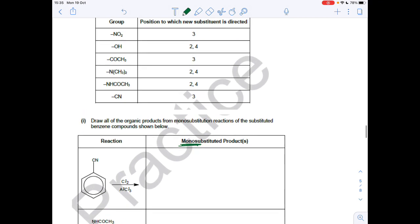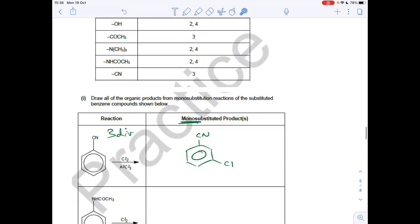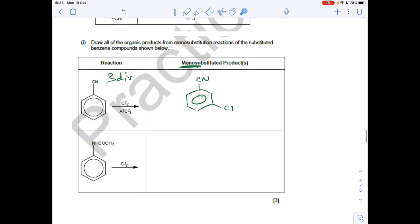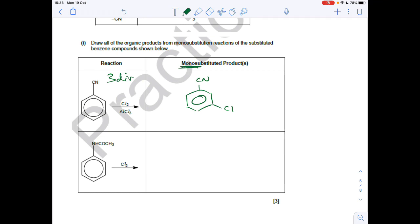Okay. So we can see from the table that the C-N group is 3 directing. So therefore the product would be this. It's a mono substitution remember. So the C-N group is going to put the Cl at position 3. So there. You could also obviously draw it here. The NHCOCH3 group you can just. There it is there. It's a 2-4 director. Now what you can't do is put two Cls on at position 2 and 4. Because that would be di substitution. Remember it's got to be mono substitution. So NHCOCH3. So we could have Cl there.